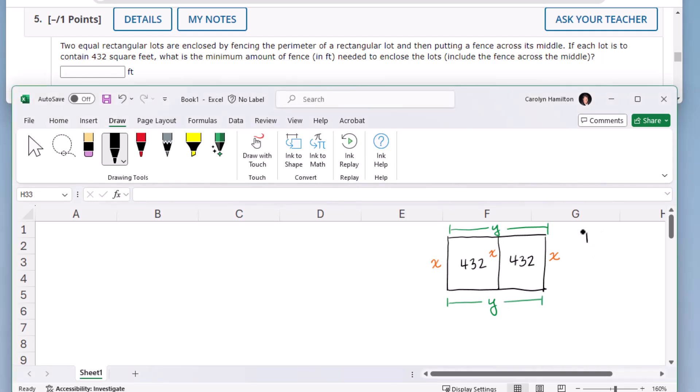So first thing is that the total area is 432 plus another 432, which is 864 square feet. And then what is the minimum amount of fence needed?